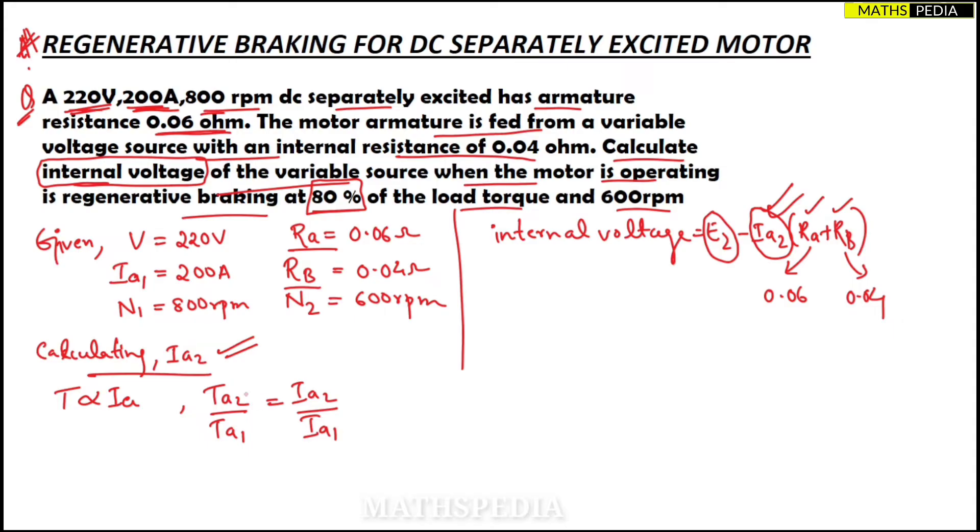Now Ta2/Ta1, what we have to put here: they have said when the motor is operating in regenerative braking at 80 percent of the load torque. That means they are talking about this ratio, 80 percent, which is 0.8.